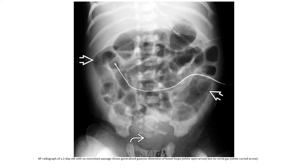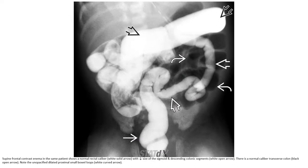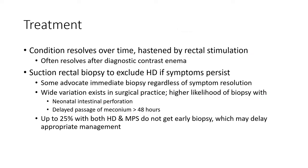AP radiographs of a two-day-old with no meconium passage show generalized gas distension but no rectal gas. Frontal contrast enema in the same patient shows a normal rectal caliber with decrease in size of sigmoid and descending colon, with normal caliber of the transverse colon. Note the retained meconium filling defects in the colon proximal to the caliber change.